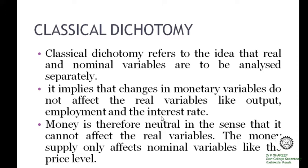Classical dichotomy refers to the idea that real and nominal variables are to be analysed separately. According to classical economists, changes in monetary variables do not affect real variables like output, employment and interest rate. Money is therefore neutral in the sense that it cannot affect real variables like employment and output. The change in money supply will lead to a direct and proportionate change in the price level alone.